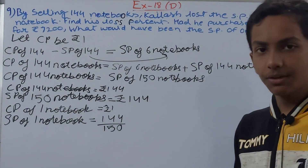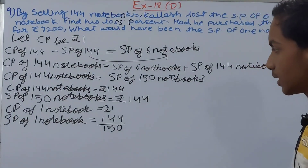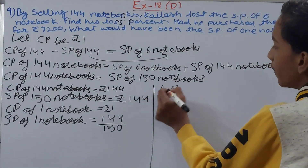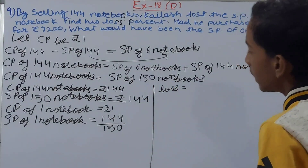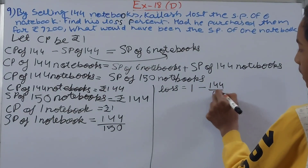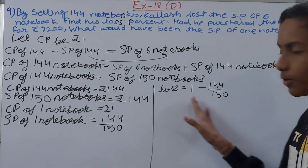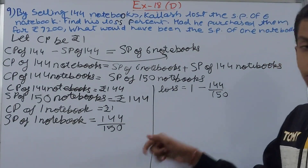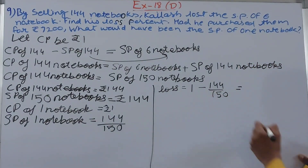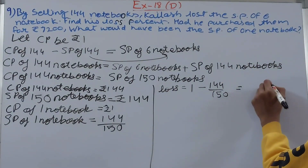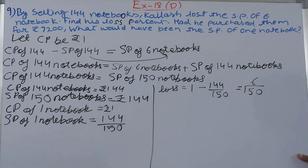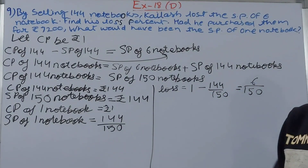Since SP of one notebook is 144/150, which is less than CP of Rs. 1, there is a loss. Now find the loss. Loss = CP minus SP = 1 minus 144/150. Always subtract the smaller from the greater. Solving this gives loss = 6/150.